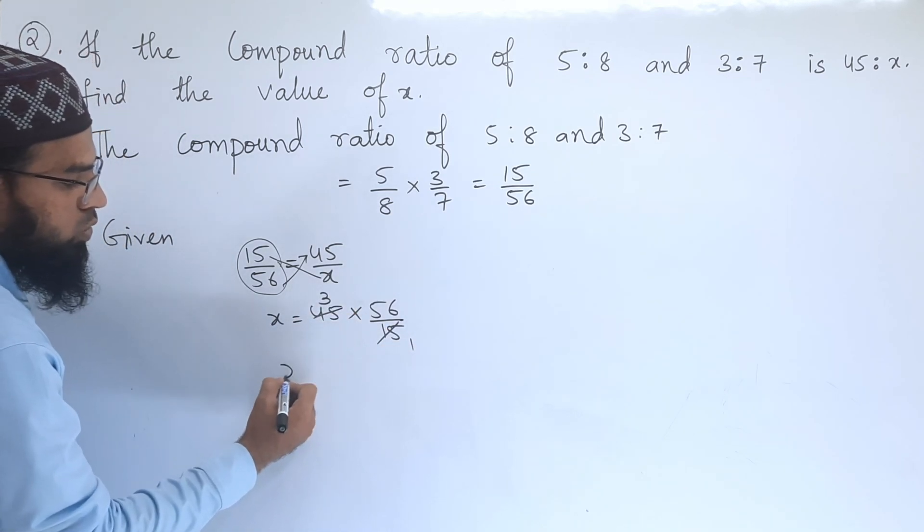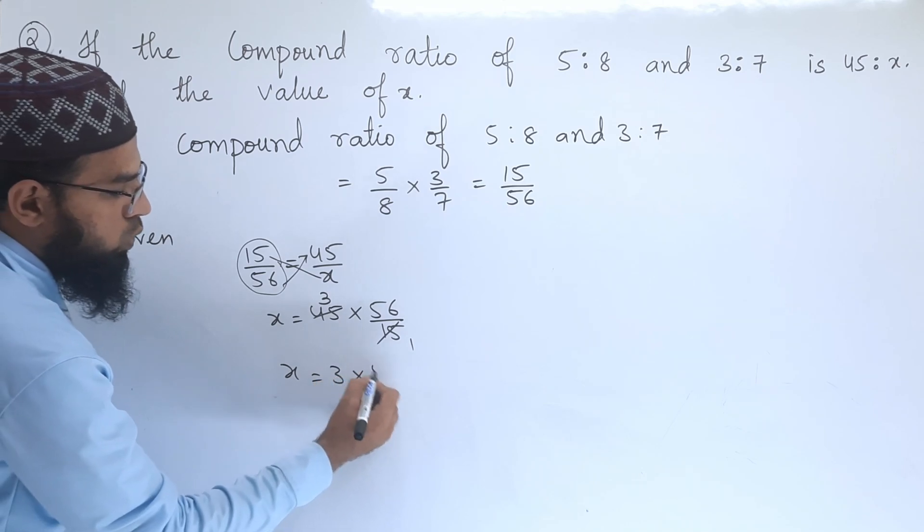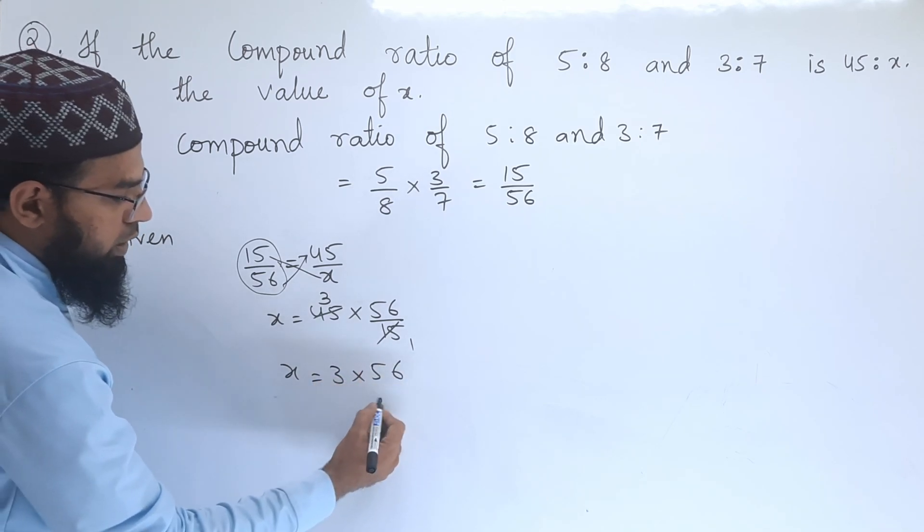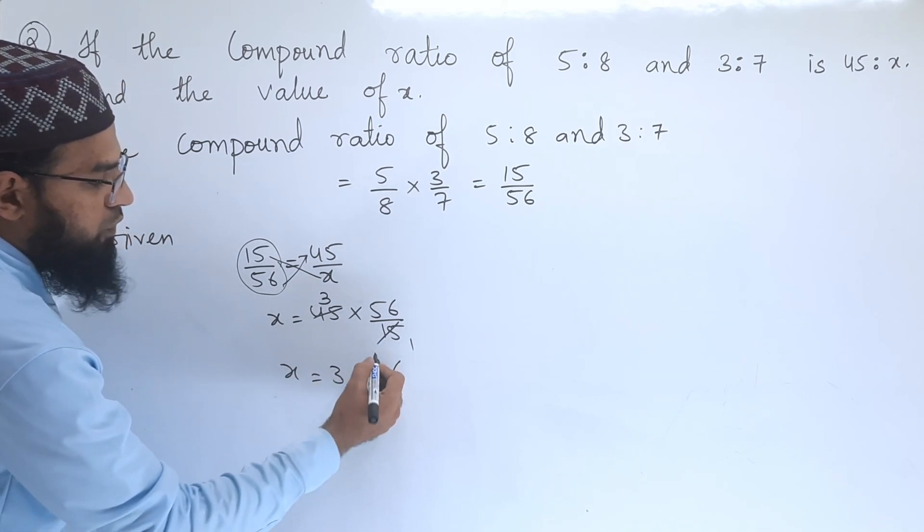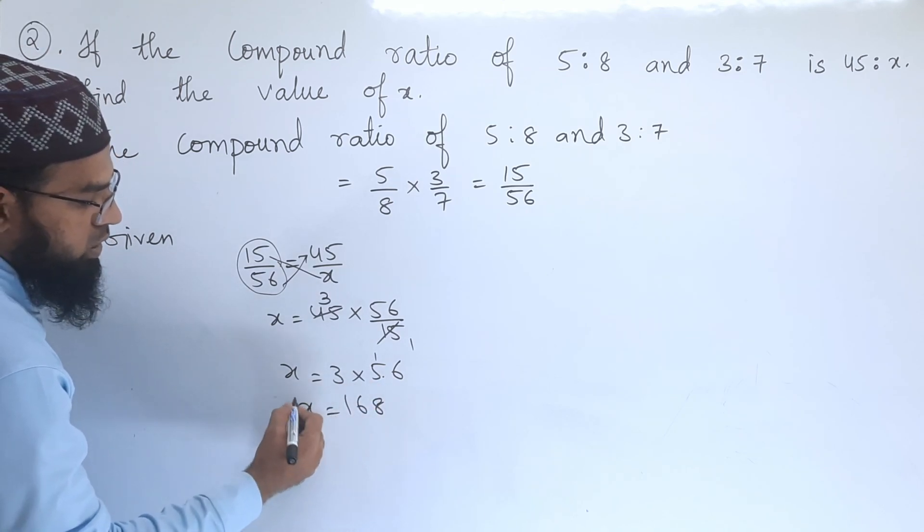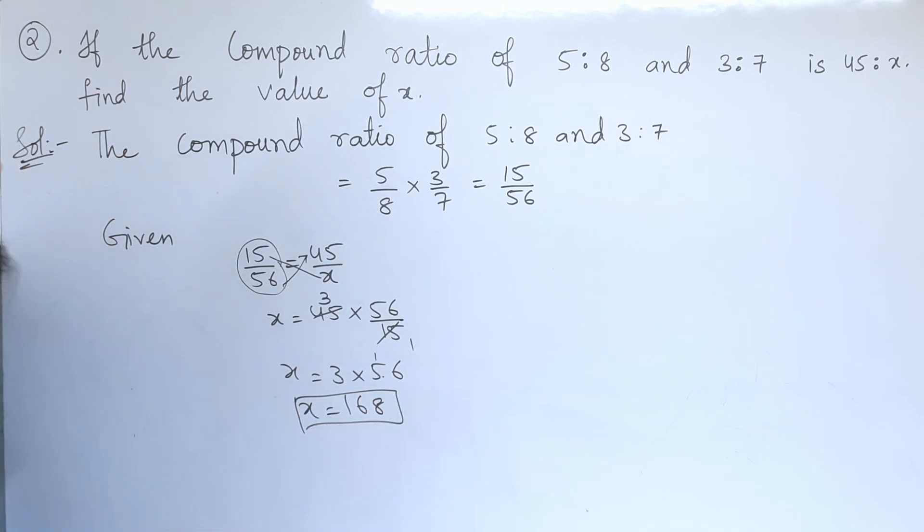So x equals 3×56. 3×6 is 18, carry 1; 3×5 is 15, plus 1 is 16. Therefore, the value of x is 168.